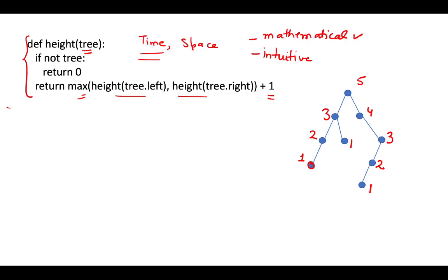Let T(n) be the time complexity of the algorithm if the input tree has n nodes. Then T(n) will depend on what you need to do to find the height of a tree with n nodes — you need to find the height of the left tree and the height of the right tree. Let us assume that the tree is a balanced one. That is mostly the assumption when doing tree problems, because if the tree is highly imbalanced, it is roughly like an array.